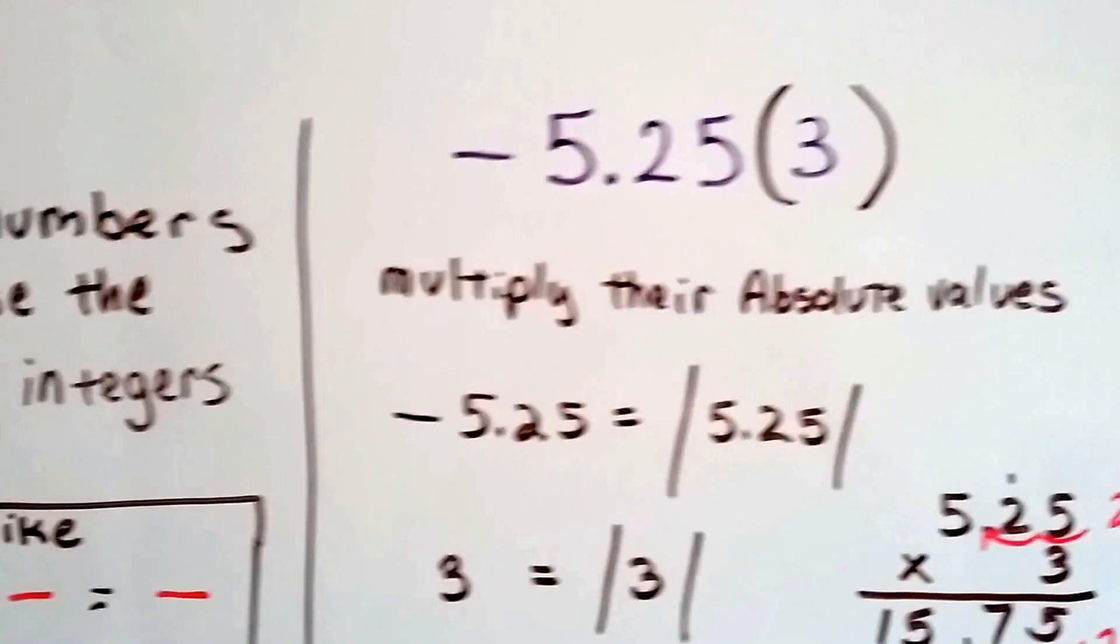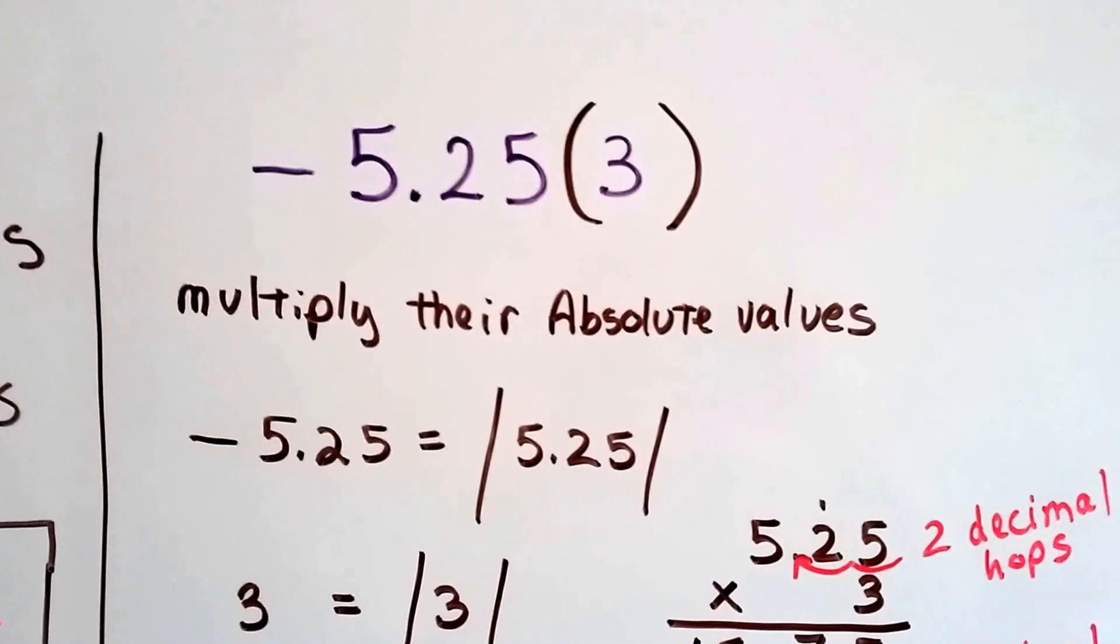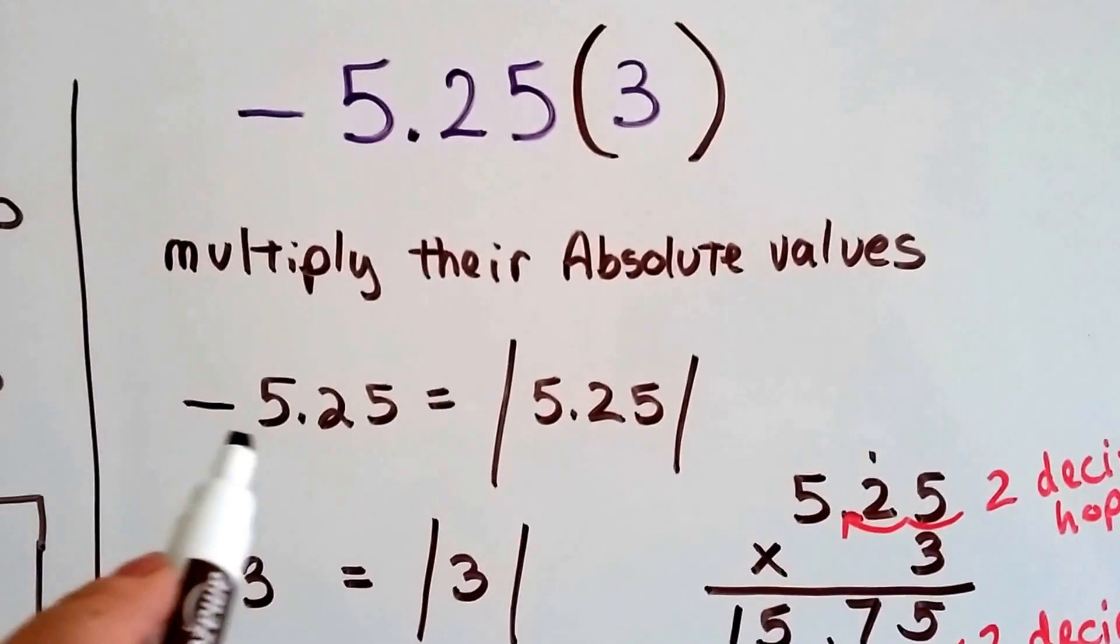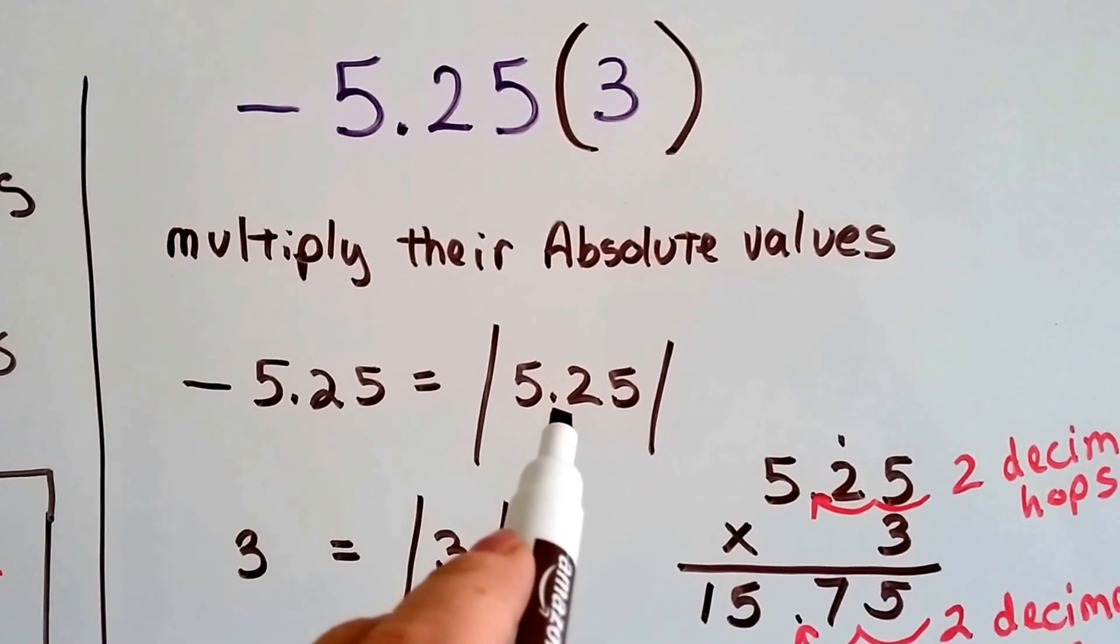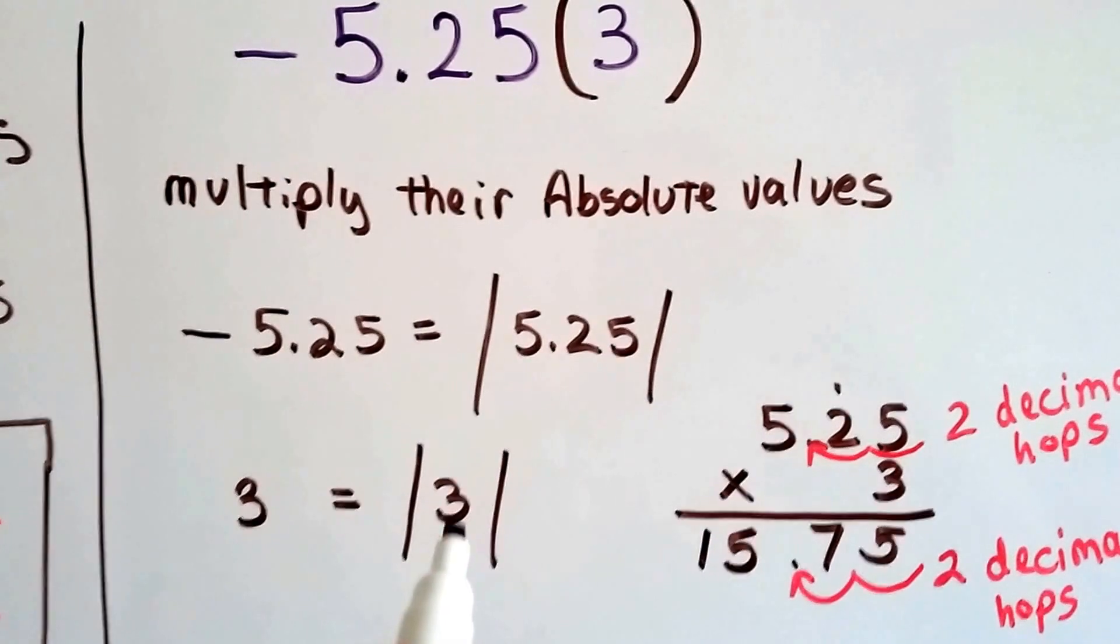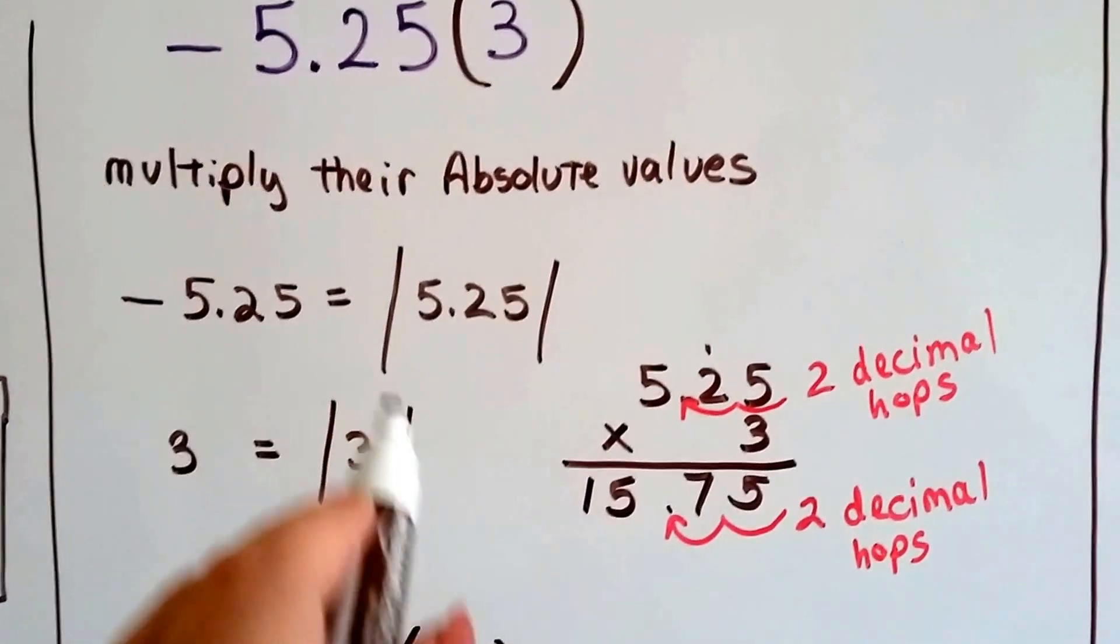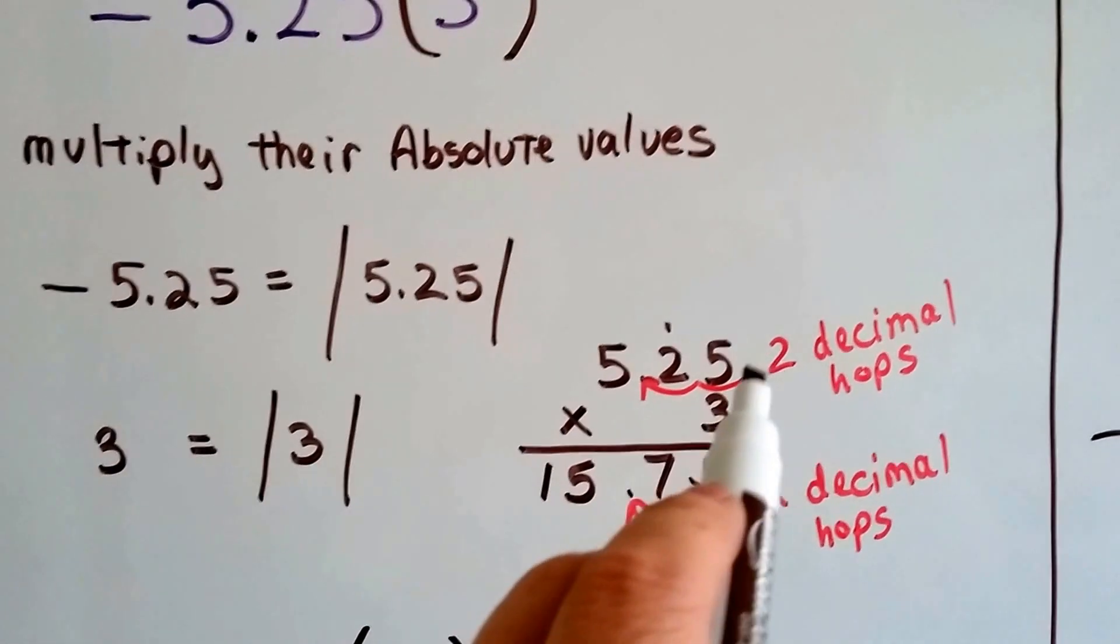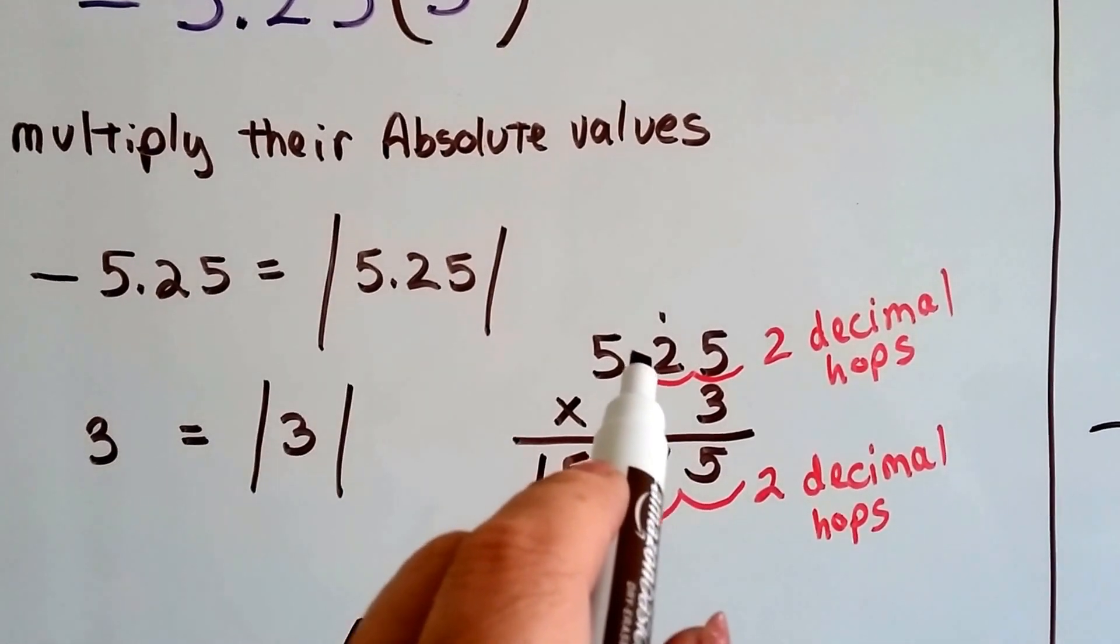So now we've got a negative 5.25 times 3. We multiply their absolute values. The absolute value of negative 5.25 is just 5.25, that's how far away it is from 0. And the absolute value of 3 is 3. And we just multiply them just like a regular multiplication problem.